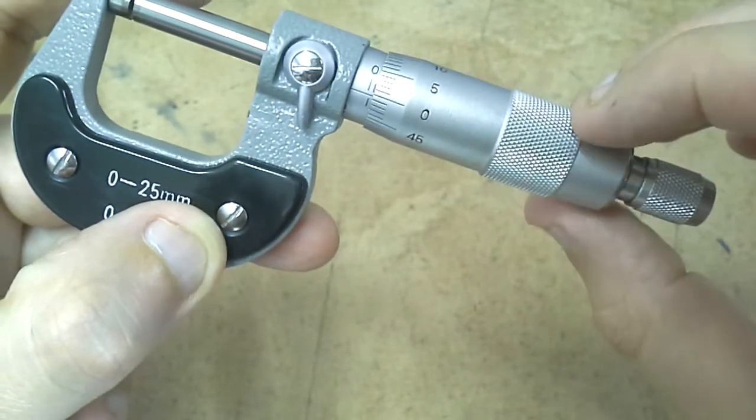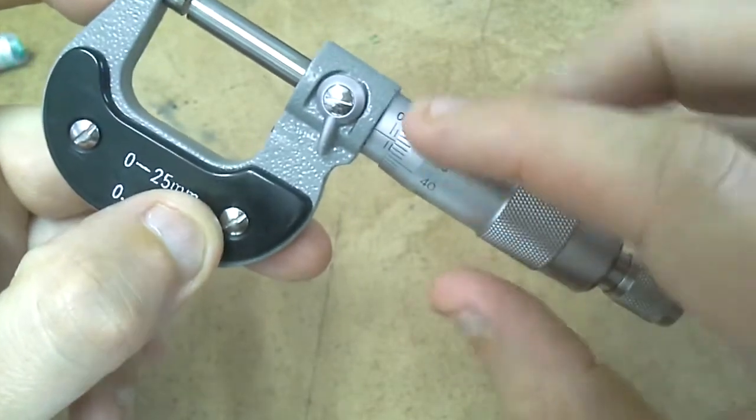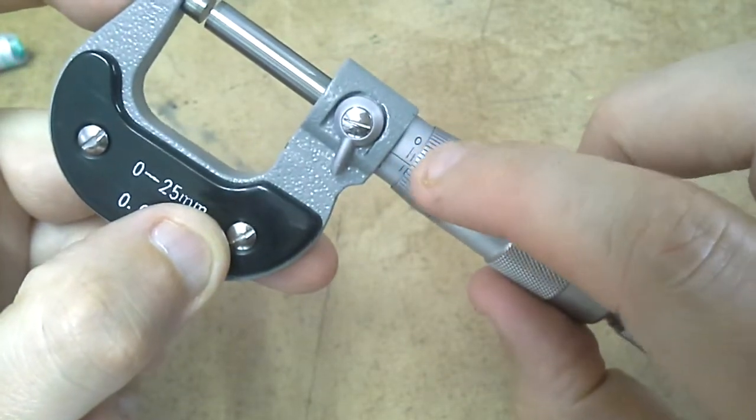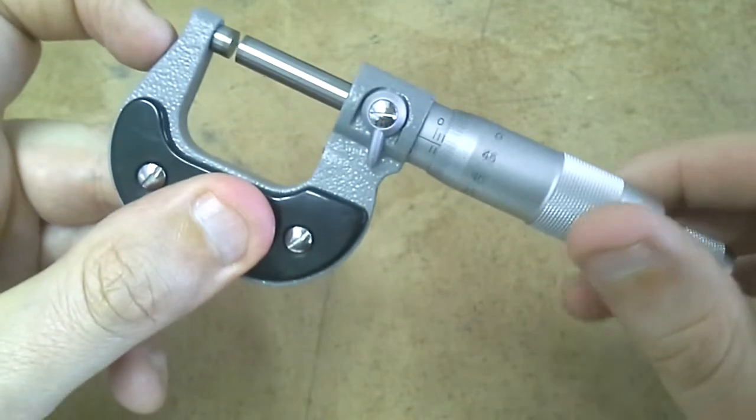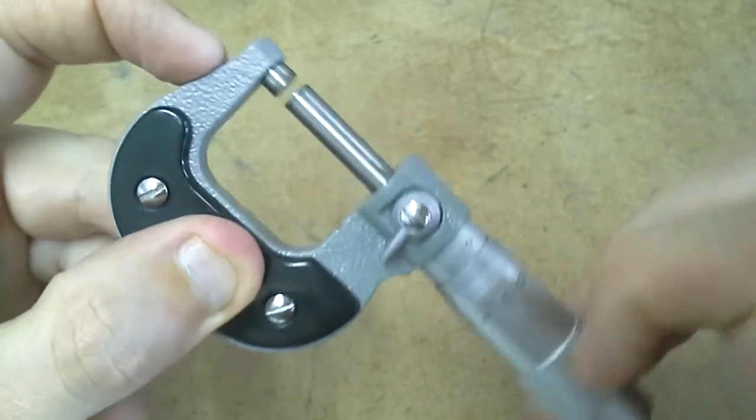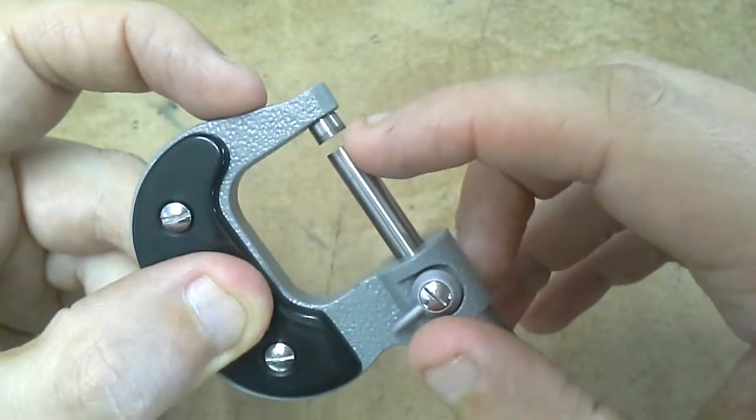Now how do you calculate using these two different numbers? You'll get a reading from here and a reading from here and a combination of these two is going to give you a result, a distance between the gaps here.